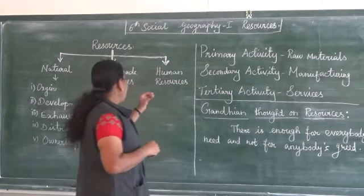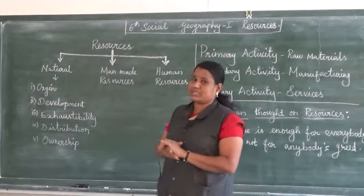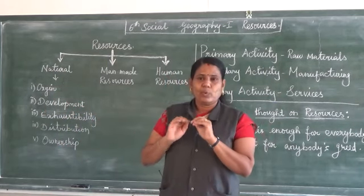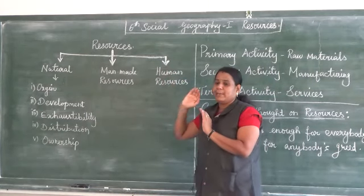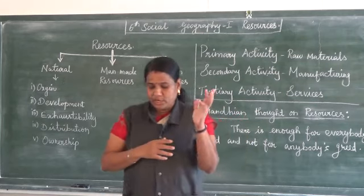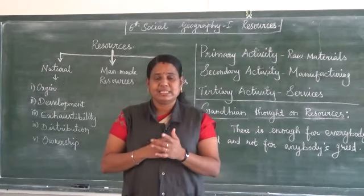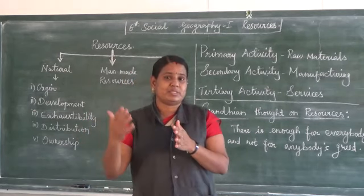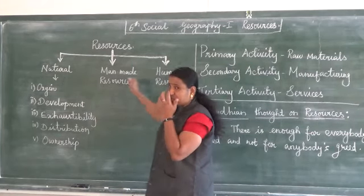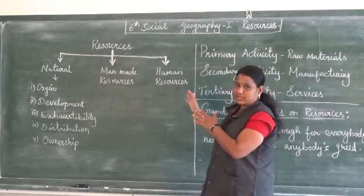Next is human resources. Humans are also part of natural resources, but they are classified separately. Why? Because compared to other natural resources, humans have a sixth sense. Through their knowledge, education, health, and skill, they can create new and different types of resources. That is why human resources are classified separately. By their skill, knowledge, and education, they are called human resources — it is one of the resources.